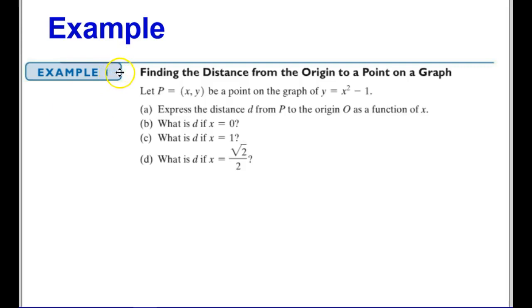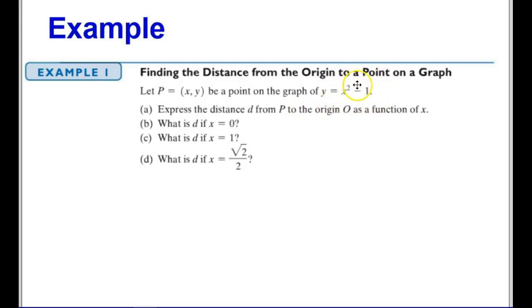Here's our first example. We're going to find the distance from the origin to a point on a graph. I have a point P, which we'll label as (x, y), because it's going to be somewhere on the graph of y equals x squared minus 1. So we're dealing with a quadratic function. I need to express the distance from P to the origin as a function of x, where P can be any point (x, y).